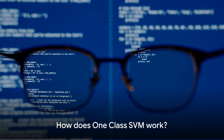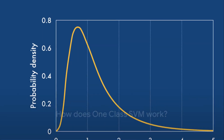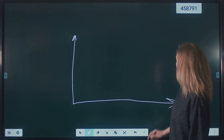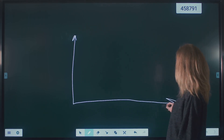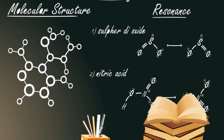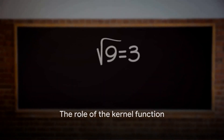Now, you might wonder, how does one-class SVM work? It's all about finding a function that is positive for regions with high density of points and negative for small densities. In simpler terms, it separates the data points into two spaces — one where the data is similar and another where it's different.